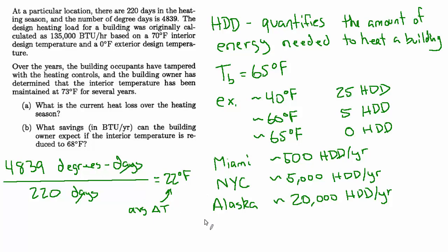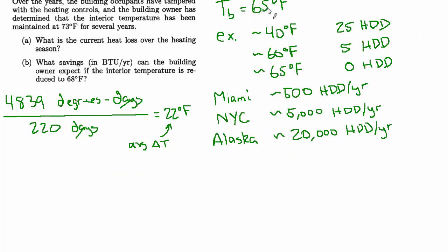Now when we say average delta T, we have to remember that that is referencing the base temperature of 65 degrees and has nothing to do with how the building is actually operated. This is just based on temperature data that's been collected for that area. It's irrelevant to the building design at this point. So we can say T base minus the average outside temperature, which I'll call T sub O, and I'll use this bar to represent average, equals 22 degrees. And we know the base temperature is 65, so we can rearrange this to solve for that average outside temperature. It's going to be 65 minus 22, equals 43 degrees. So the average outside temperature during the heating season for this area is 43 degrees.